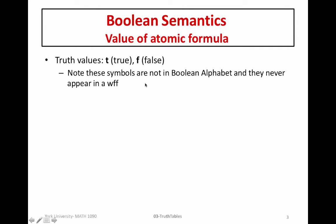One key thing to remember as we study in the metatheory is that we're introducing the symbols true and false, which are not within our Boolean alphabet. This is how we know we're studying in the metatheory — because we have symbols that are not within our Boolean logic. This is where we're providing a meaning outside of logic, and these symbols will never appear in a well-formed formula.